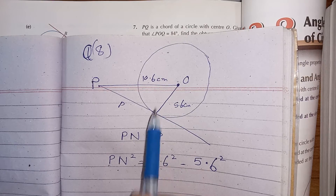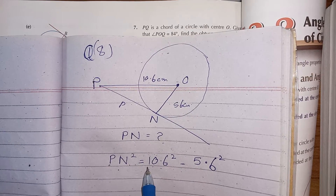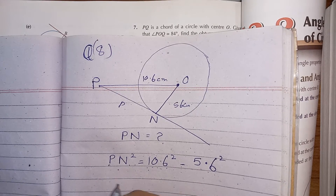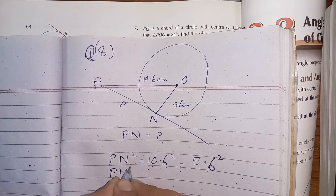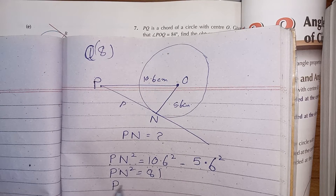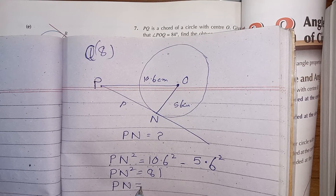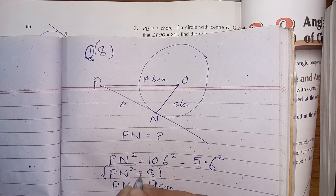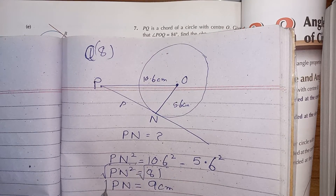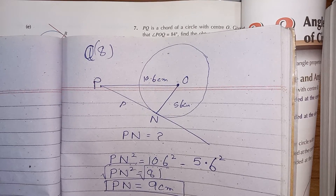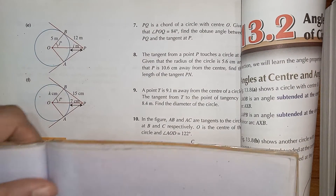Using property number 3, ON is perpendicular to PN. Applying the Pythagorean theorem: PN² = 10.6² − 5.6² = 81. Taking the square root of both sides, PN = 9 centimeters.